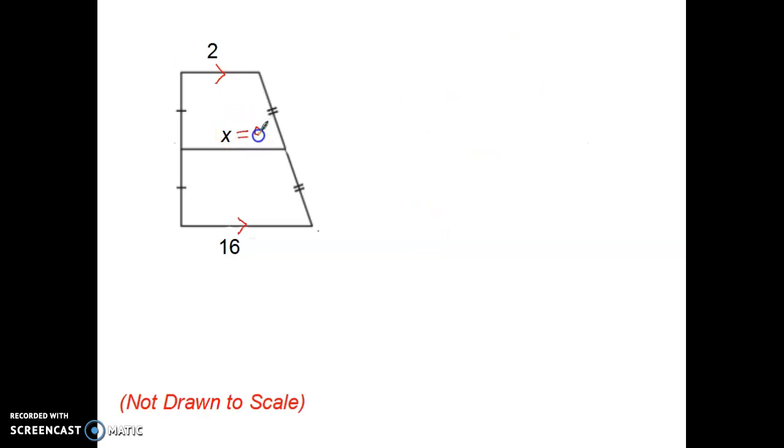Something else I want to look at now that I know that my median is 9 units long. I want to look at the difference between my median length and each base. The difference between 9 and 2 is 7. The difference between 16 and 9 is also 7. That's going to hold true for medians. Now these 7s are not a length of the segments of either of those sides, but it's a difference in value between the base and the median.